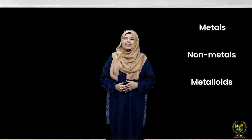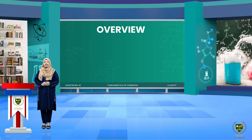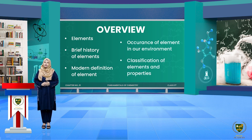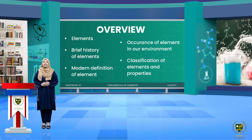We will discuss the differences between metals, non-metals, and metalloids with their examples in our next lecture in detail. In today's lecture we started the topic of Elements, covered the brief history of elements, the modern definition of elements with all its components, the occurrence of elements in our environment, and the classification of elements according to physical states of matter. We have just named the classification according to their properties — metals, non-metals, and metalloids — which we will cover in detail next time. Allah Hafiz.